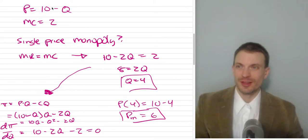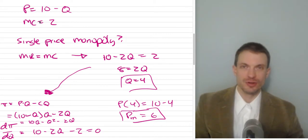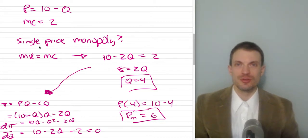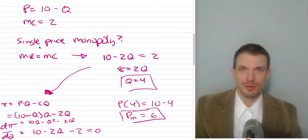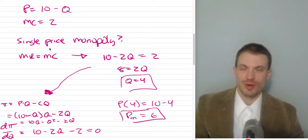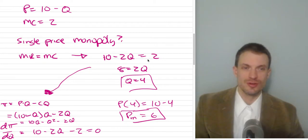I'll give us a demand curve: 10 minus Q. I'll give us a constant marginal cost of 2. What would a single-price monopoly do here? The single-price monopoly is going to produce the output where marginal cost equals marginal revenue. Marginal revenue is 10 minus 2Q, set equal to 2.